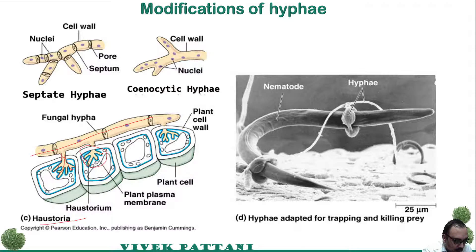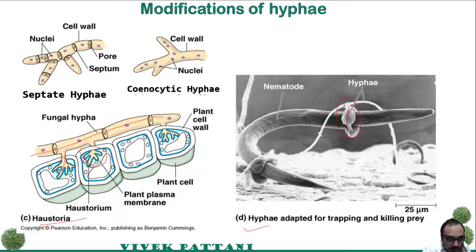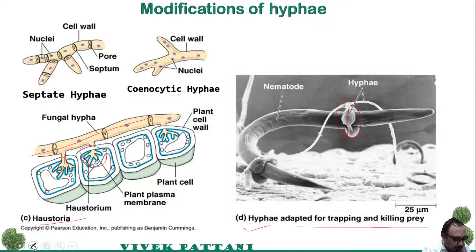Another special modification can even trap and kill nematodes. The diagram shows hyphae with specialized structures. When a nematode passes through these structures, it gets trapped into the fungi. This is how these hyphae are adapted for trapping and killing prey.